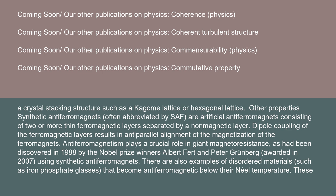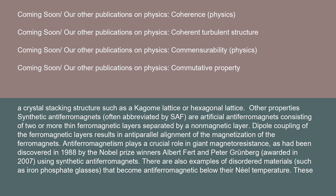There are also examples of disordered materials, such as iron phosphate glasses, that become antiferromagnetic below their Néel temperature. These disordered networks frustrate the antiparallelism of adjacent spins — it is not possible to construct a network where each spin is surrounded by opposite neighbor spins. It can only be determined that the average correlation of neighbor spins is antiferromagnetic. This type of magnetism is sometimes called speromagnetism.